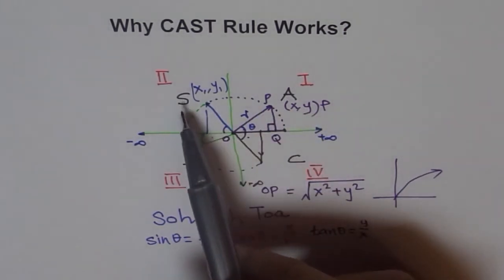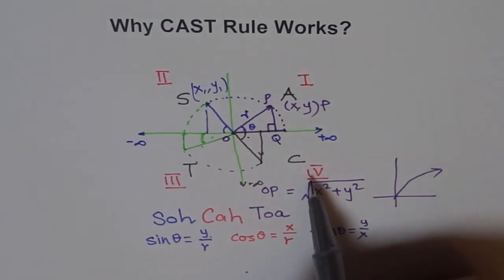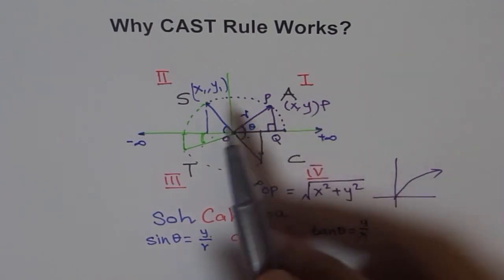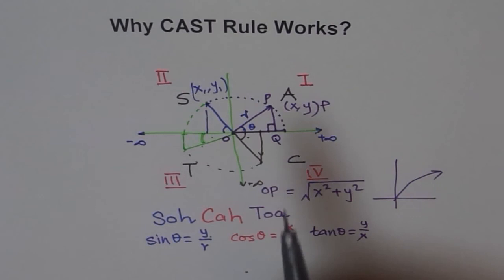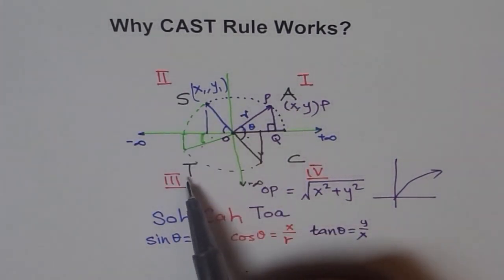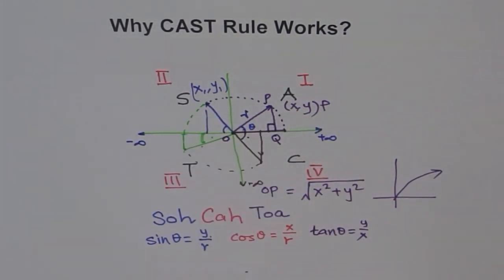So basically we get C, A, S, T starting from quadrant 4. Remember, CAST rule. CAST rule says cos is positive here and this quadrant is not 1. This quadrant is quadrant 4. Or you can remember this rule with our Indian way of remembering. That is, we love tea, right? All silver tea cups. That's a beautiful way of having tea. I hope this will get in your mind forever. Thank you.